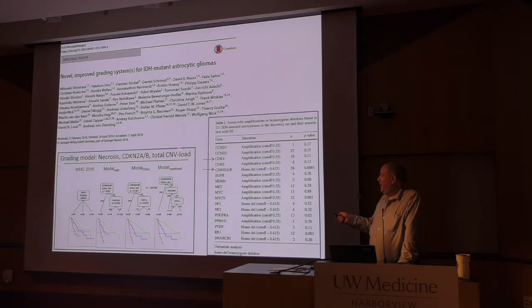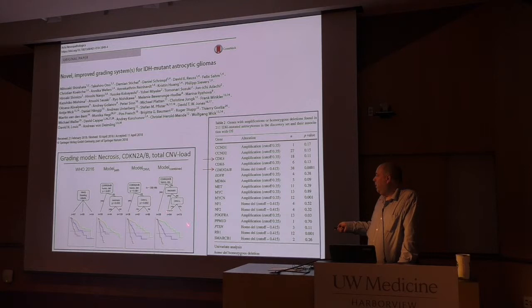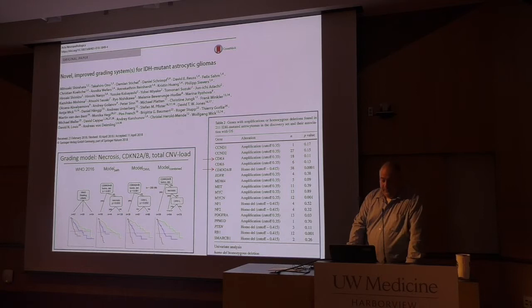CDKN2A loss and total copy number variation — either low or high — along with necrosis can predict prognosis. That's where it stands. This total CNV load might be the rate-limiting step for wide adoption by practicing neuropathologists because it really requires a platform that's technically difficult and cost-prohibitive in some areas. This also just came out recently.